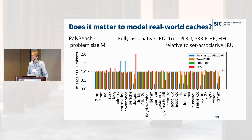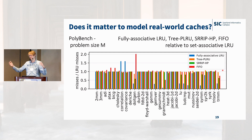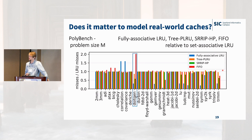Does it matter to accurately model real-world caches? Looking at the number of misses relative to set-associative LRU across benchmarks: for some benchmarks it doesn't matter, probably because the data set is either too large or too small for the cache. But there are many examples — particularly for the 2HN policy — where there's a huge gap between fully associative LRU and set-associative LRU, and also a big gap between SRRIP and LRU.